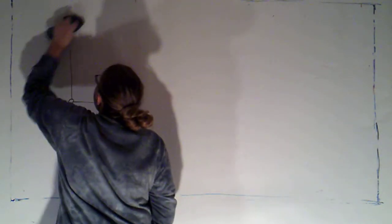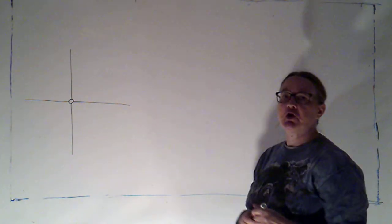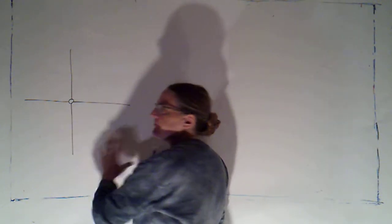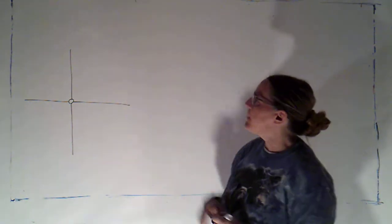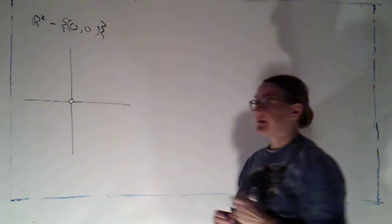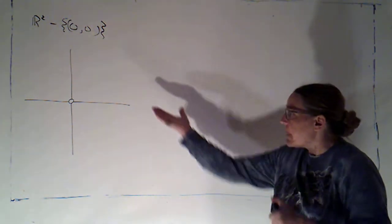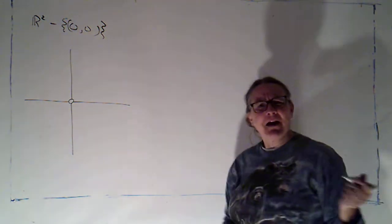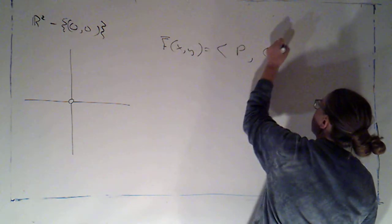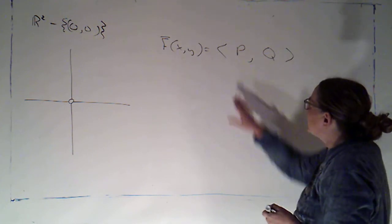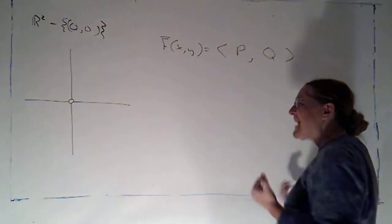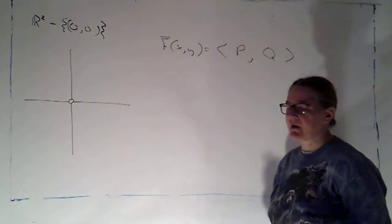So if I have a region in 2-space — I've drawn here R2 minus the origin — that's a region that is not simply connected because it has a hole in it; the hole is the origin. If I were to have a vector field f(x, y) = (p, q), where those are functions of x and y, and if I were to satisfy that the partial of p with respect to y equals the partial of q with respect to x, why doesn't that mean it's conservative — that I can find a potential function for it?